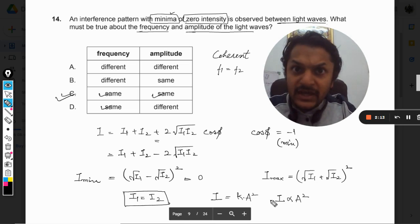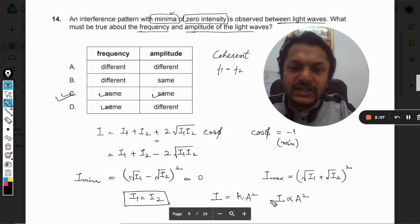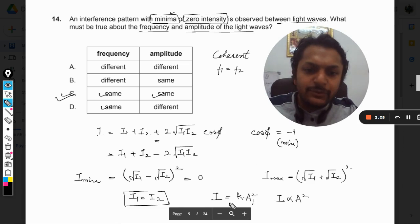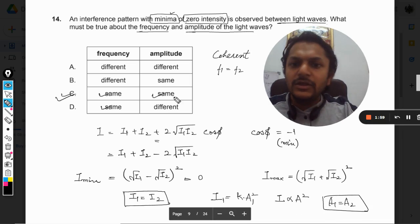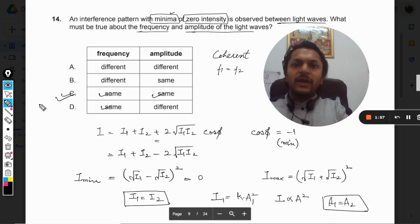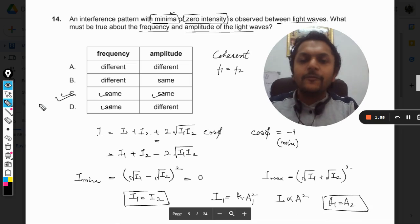So we all know that intensity of a wave is directly proportional to the square of the amplitude, and k is a constant value which is constant for both of the waves. And so we have to say that I₁ will be directly proportional to A₁, so A₁ will also be equal to A₂. So with this, our answer for this question will be C.